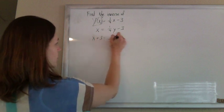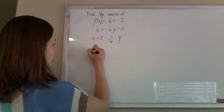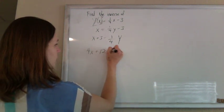so x plus 3 equals one fourth y. Multiply everybody by 4, 4x plus 12 will equal the y.